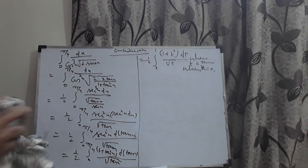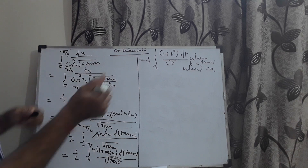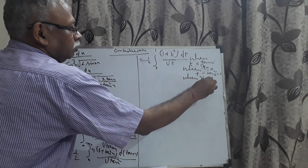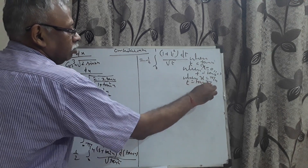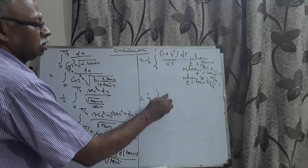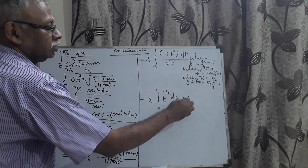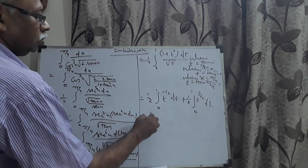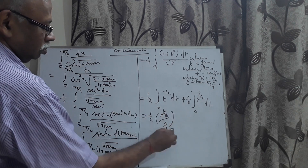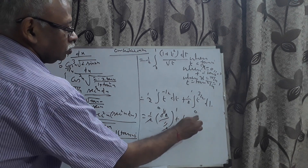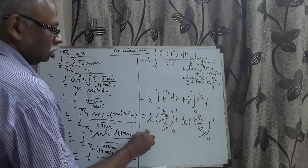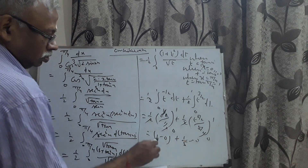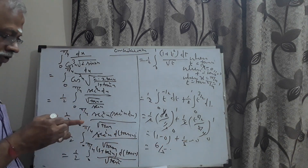Splitting into two integrals: (1/2)∫₀¹ t^(−1/2) dt + (1/2)∫₀¹ t^(3/2) dt. Applying the power rule ∫xⁿdx = x^(n+1)/(n+1): this gives [t^(1/2)/(1/2)]₀¹ + (1/2)[t^(5/2)/(5/2)]₀¹, which simplifies to 1 + 1/5. Taking LCM, the final answer is 6/5.